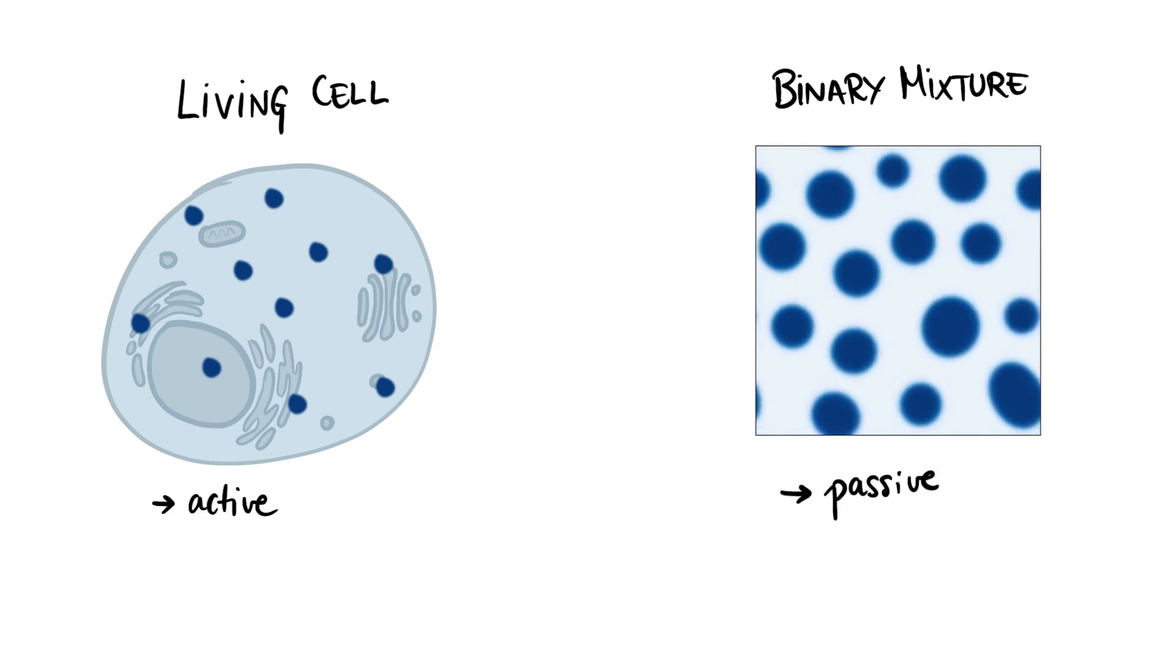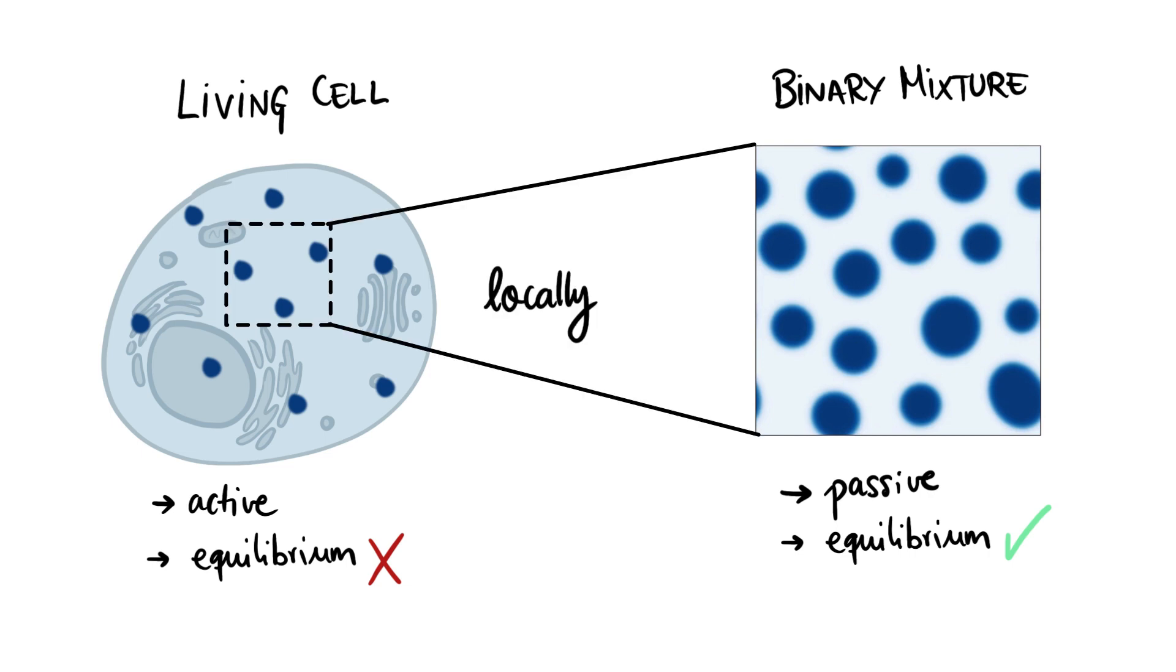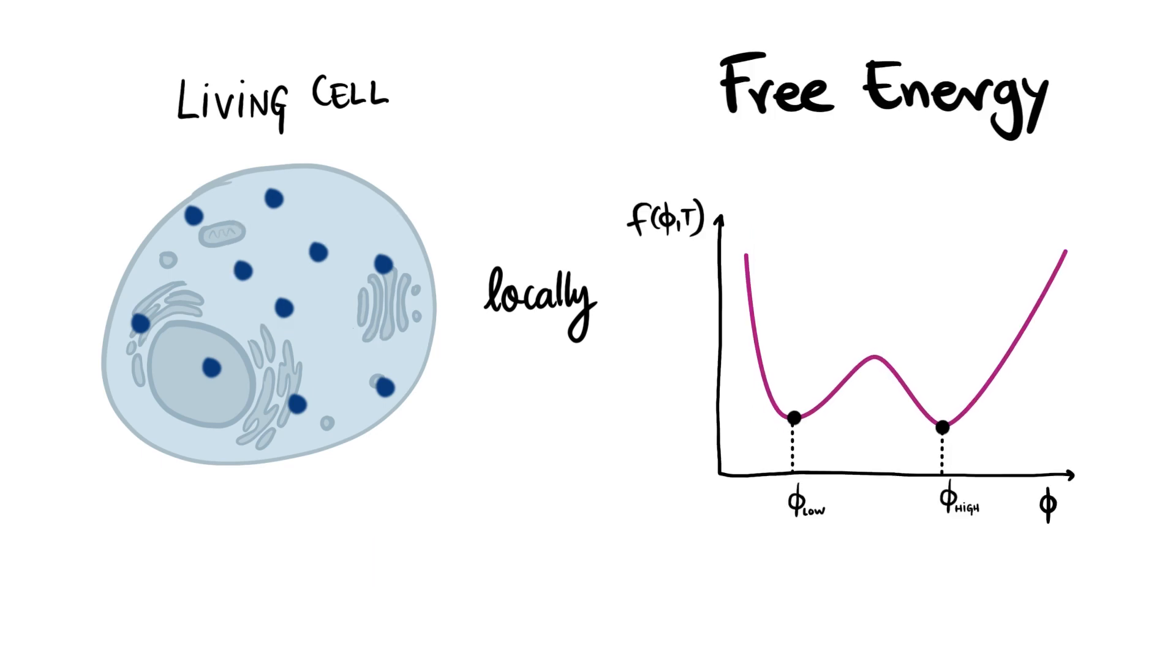Living cells are active and exchange energy and substances with the surroundings which keeps them out of thermodynamic equilibrium. But surprisingly recent research shows that equilibrium thermodynamics can be locally applied in cells. So the free energy of mixtures is a powerful concept that can be used to understand cells as polyphasic systems.